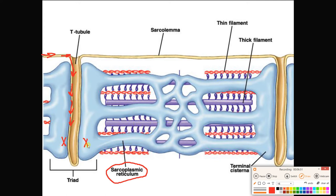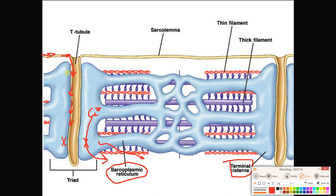The T-tubule is sandwiched by two enlarged portions of the sarcoplasmic reticulum. Each of these enlarged portions is known as a terminal cisterna, and what gets stored in here is calcium. So the action potential comes down, gets adjacent to this part of the sarcoplasmic reticulum where we're storing calcium, and the calcium is going to leave the SR and get into the cytoplasm itself. The action potential goes down the T-tubule and prompts the neighboring sarcoplasmic reticulum to release its calcium.